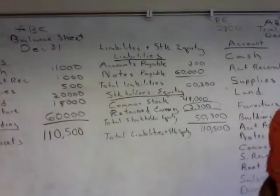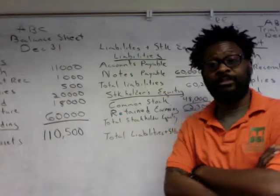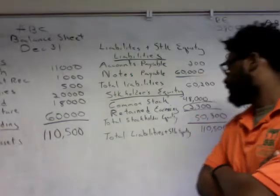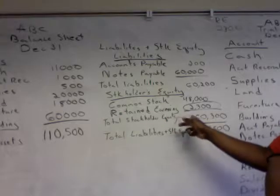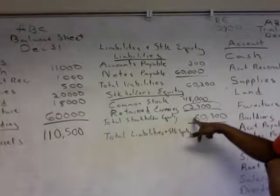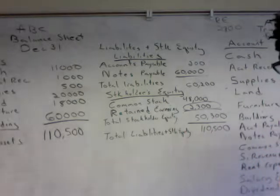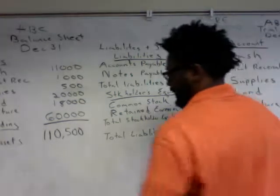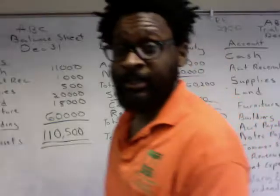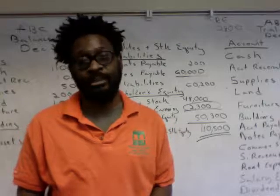That $2,300 retained earnings balance came from our previous statement — the statement of retained earnings — which we calculated and are now adding to the balance sheet. We get a total stockholders' equity of $50,300. Adding total liabilities plus total stockholders' equity gives us $110,500, which is exactly the same as our total assets. Our balance sheet is complete. Those are the three financial statements you should understand carefully.